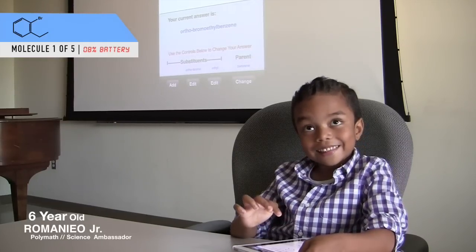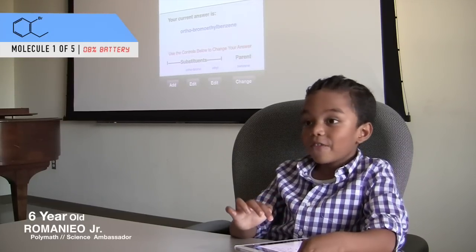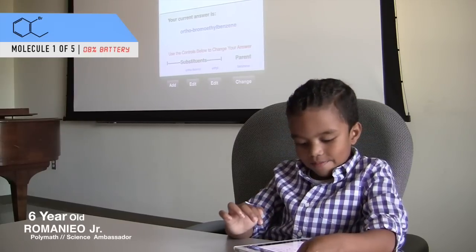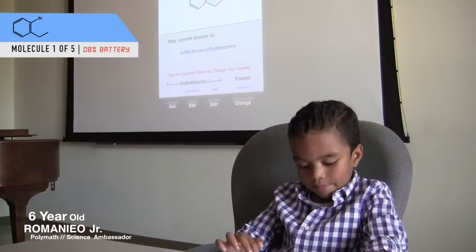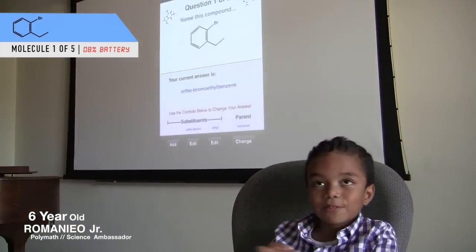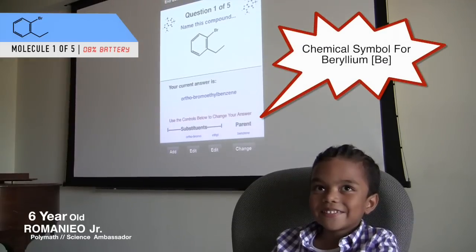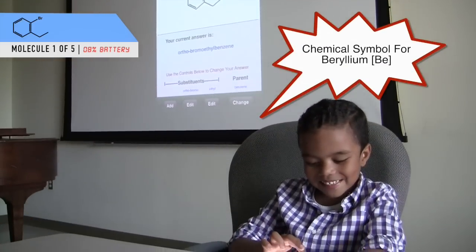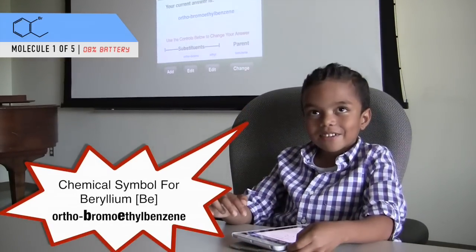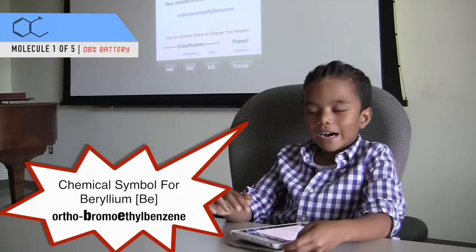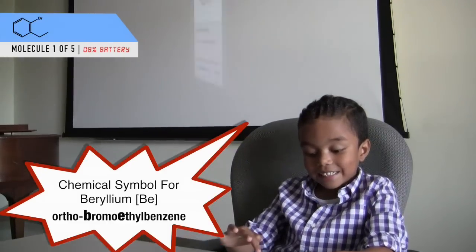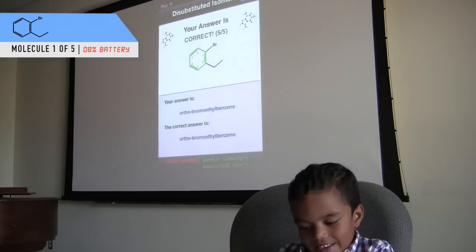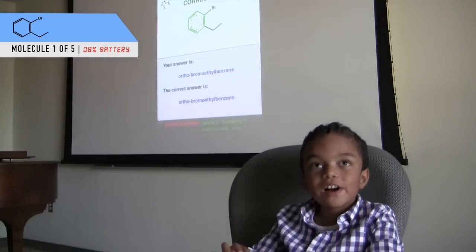Orthobromoethylbenzene — alphabetical order. Let's see if it's correct. It is. Voila. Five out of five.